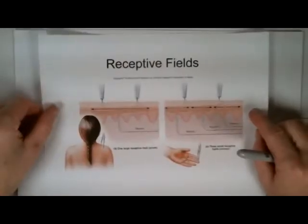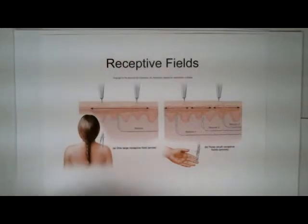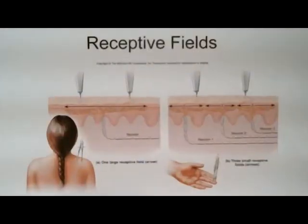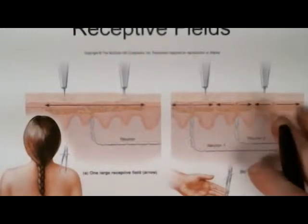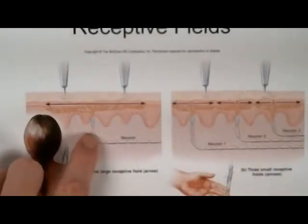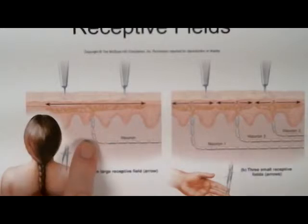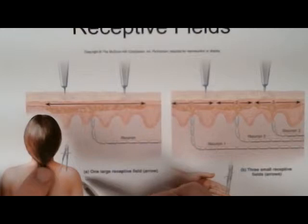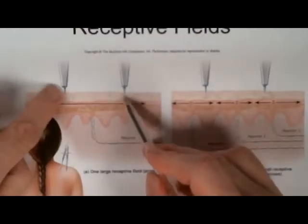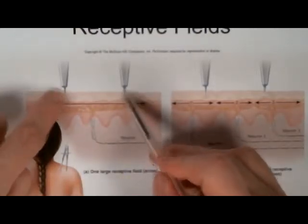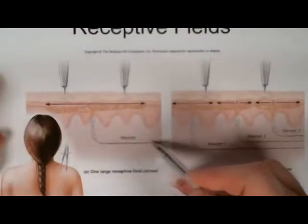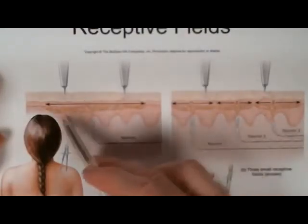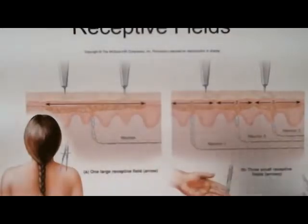Let me show you a picture here that I pulled out of another textbook. I'm going to try and zoom in a little bit. So, a receptor field — if you look at this picture, we have someone being touched on the shoulder by a compass. We have two points of that compass touching the skin. There is this sensory neuron that's picking up this touch. This somatic sensor is picking up this touch.